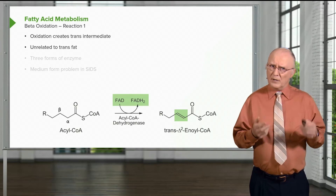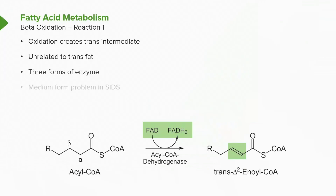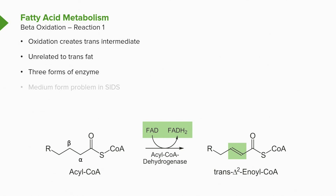Trans fat is typically made by chemical treatment of food, whereas this trans intermediate is a normal intermediate in fatty acid degradation. There are three forms of acyl-CoA dehydrogenase: one for long fatty acids (typically longer than about 20 carbons), one for medium-sized fatty acids (between about 10 and 18 carbons), and one for short fatty acids (typically less than 10 carbons). Of note, the medium-chain acyl-CoA dehydrogenase is absent in infants who have died from sudden infant death syndrome (SIDS), suggesting a relationship between absence of this enzyme and SIDS.